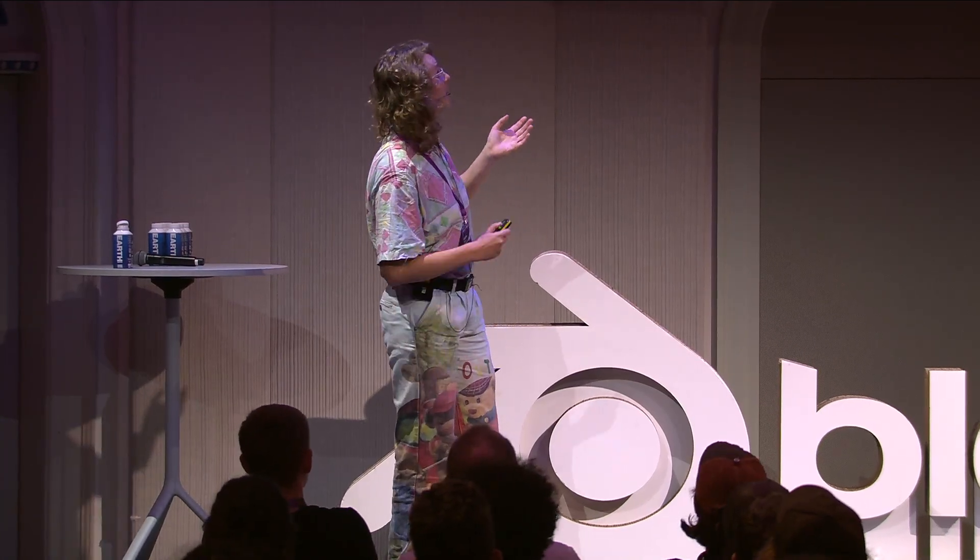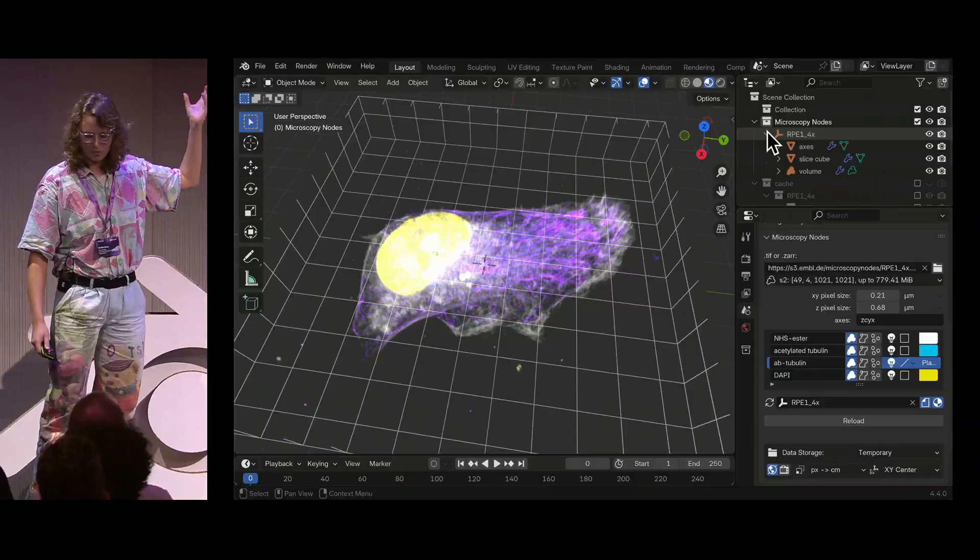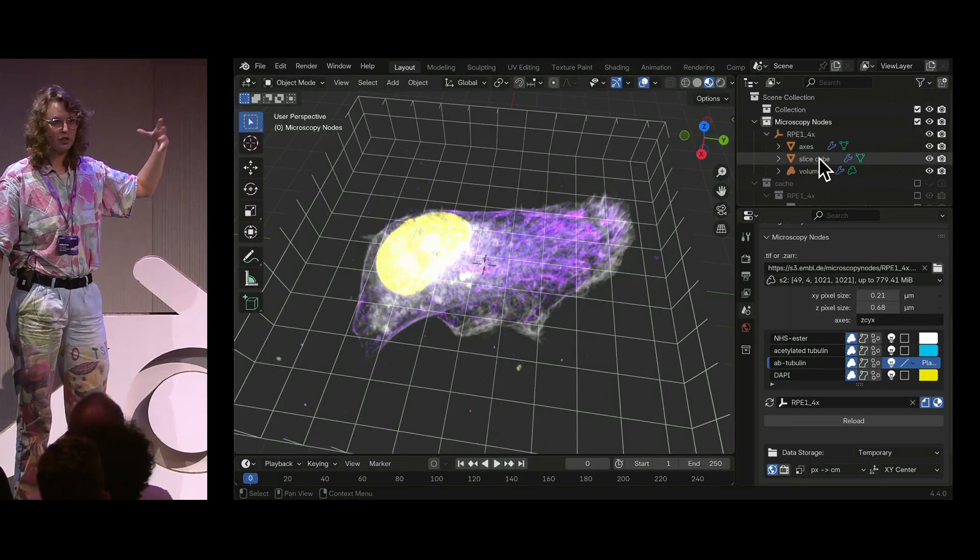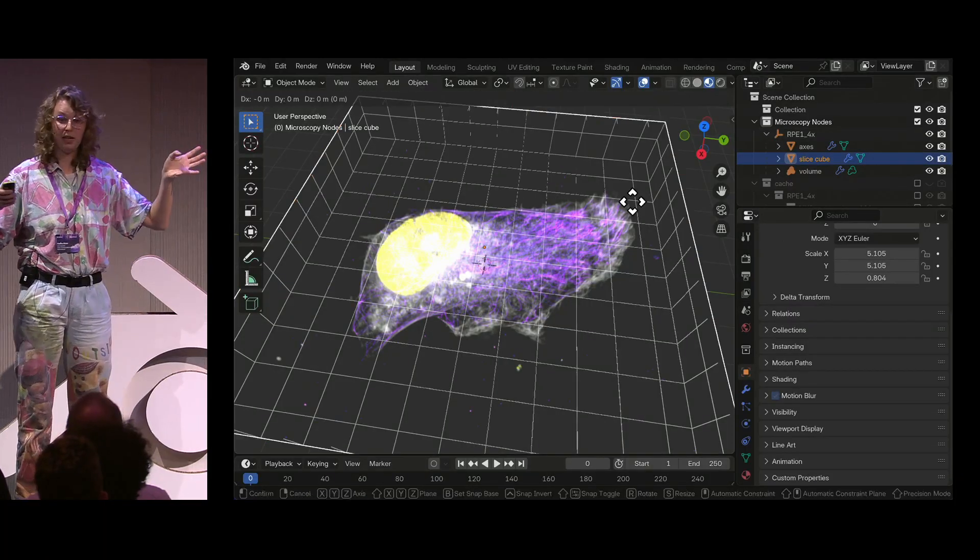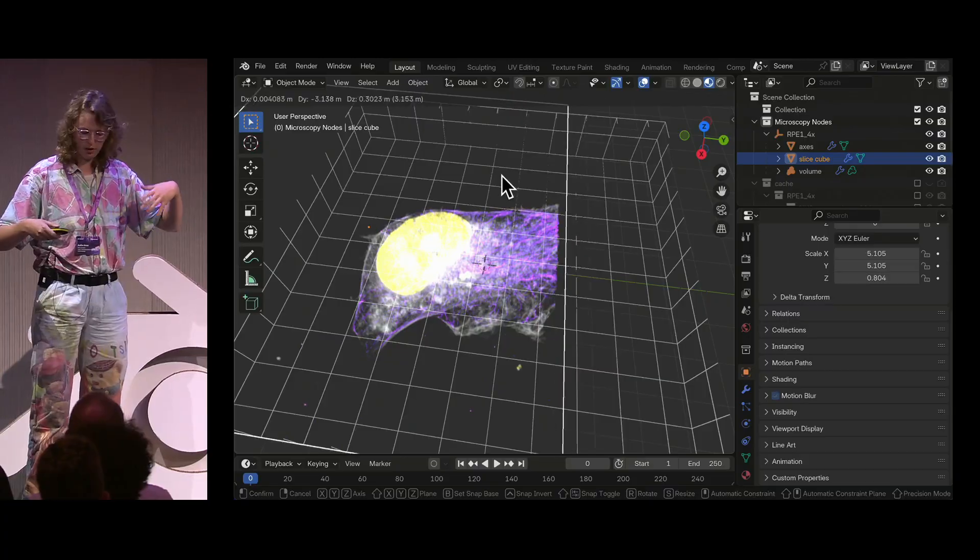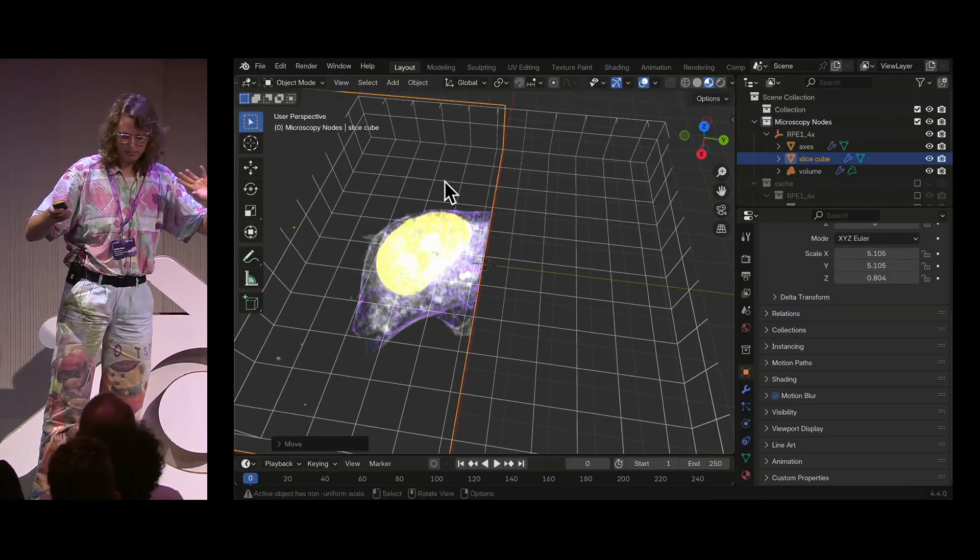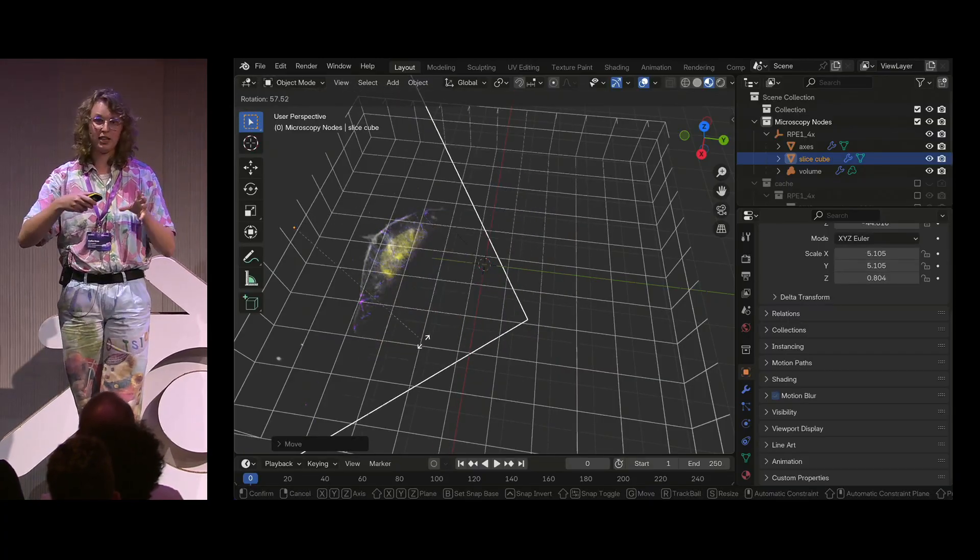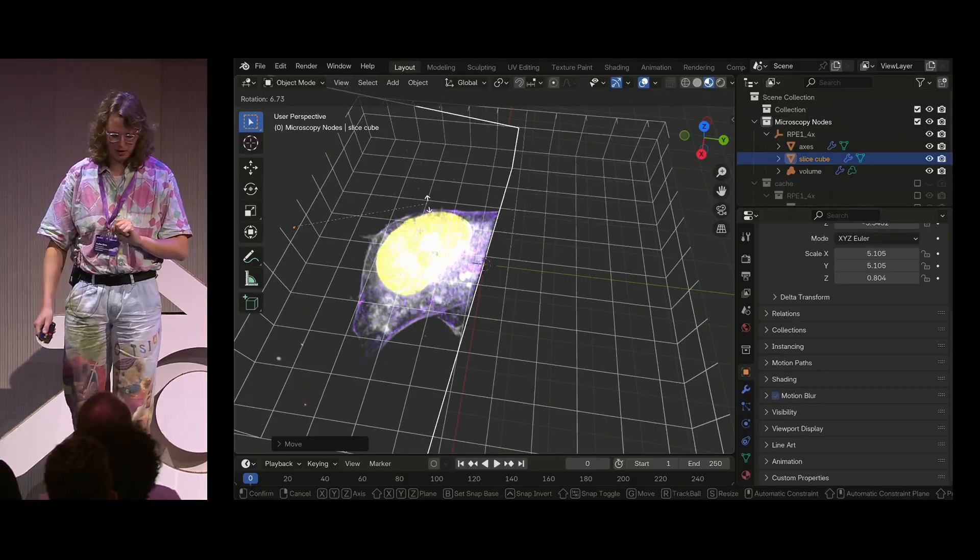So what we've actually loaded is this holder with the axes, as I explained, a slice cube, which is a cube that just modulates the visibility of all the volumes, so you can rotate, scale, and whatever this. And you can also actually make multiple slice cubes and make an interesting array with that.